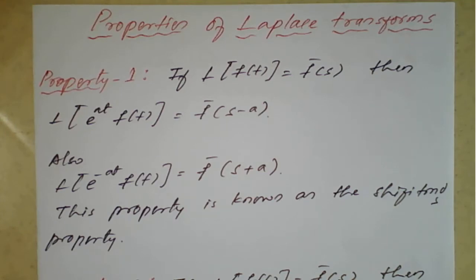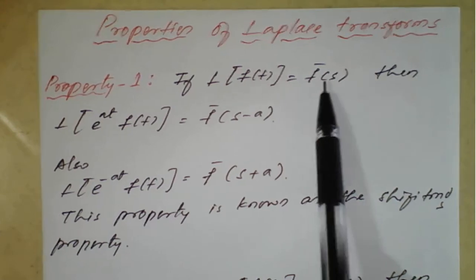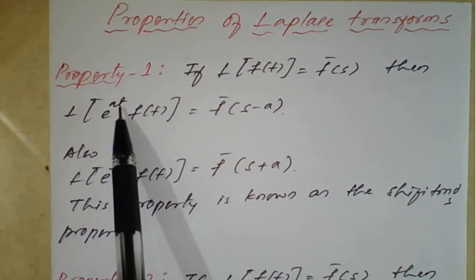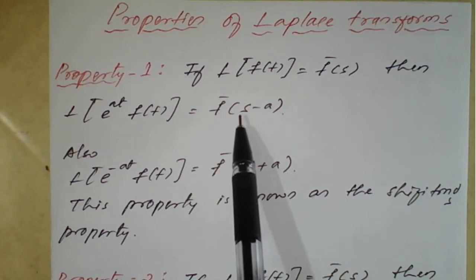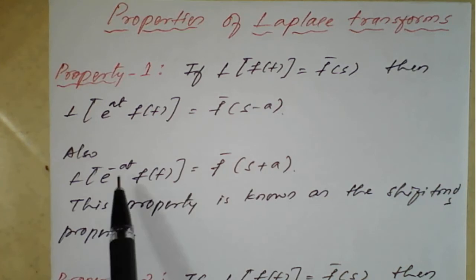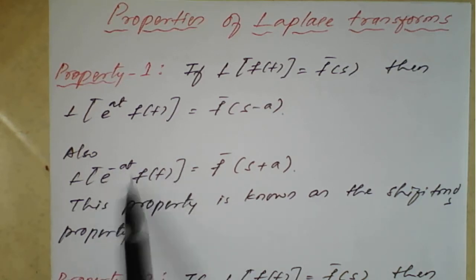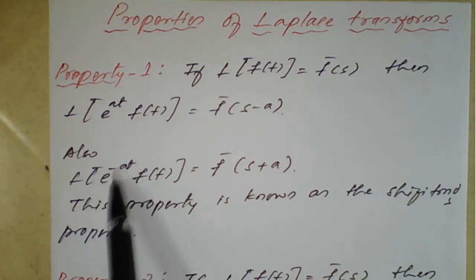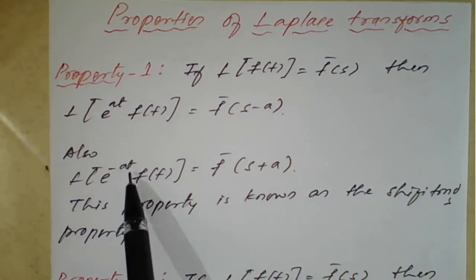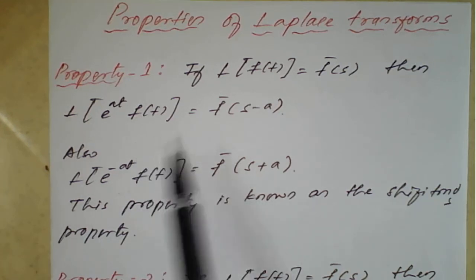The first property: if Laplace transform of f(t) is equal to F(s), then if e^(at) is multiplied to f(t), the transformation converts s to s minus a. If it is e^(-at), it becomes s plus a. So when we get a result of Laplace transform, we replace s by s minus a if it is e^(at), and s plus a if it is e^(-at). This is called the first shifting property — shifting from s to either s minus a or s plus a.